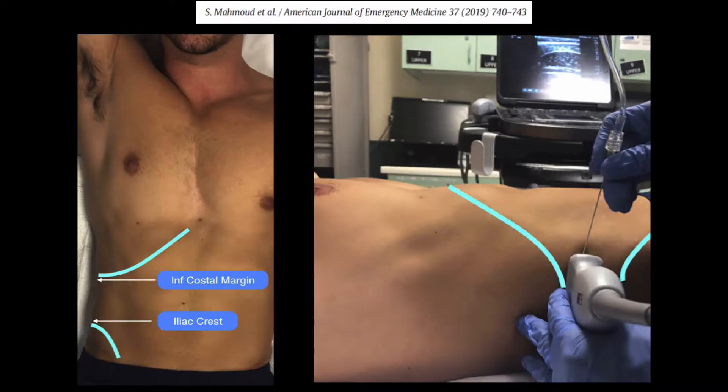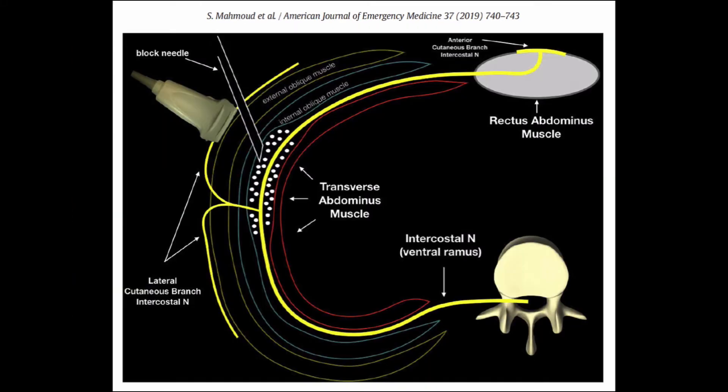The TAP block is performed with the patient supine using an in-plane approach with the needle visualized in long axis. Finding the area in between the inferior costal margin, iliac crest, and the mid to anterior axillary line should be the target. Here is a diagram from a paper by Dr. Mahmoud. The picture shows the installation of local anesthetic in the plane overlying the transverse abdominus muscle, targeting the cutaneous branch of the intercostal nerve. Given the fact that you are filling a potential space, higher volumes of local anesthetic are required. Literature and experience often cite administering between 20 to 30 cc's.